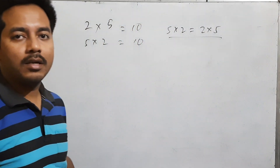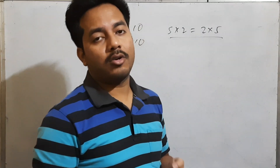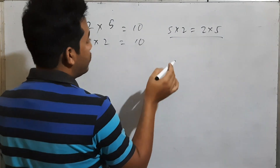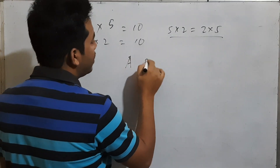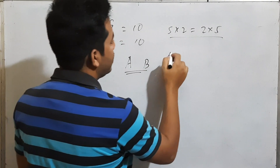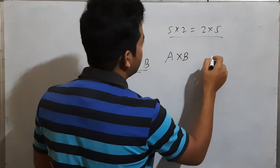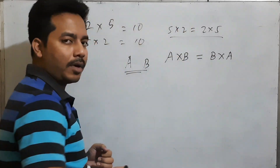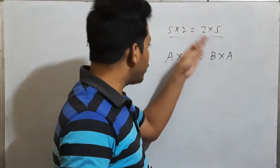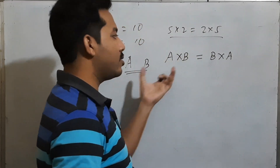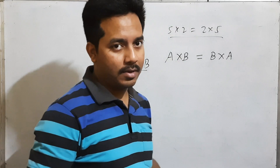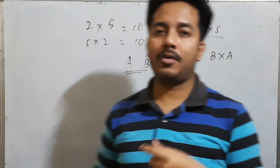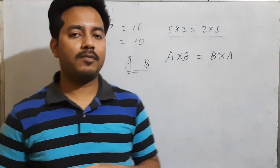You can use a commutative property. If you have a commutative property, you can use a set. If you have a pass, you can use a pass. And if you have a Cartesian property, it can be on a Cartesian property.